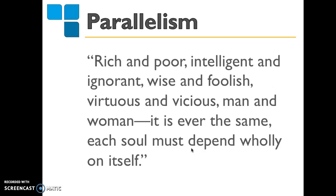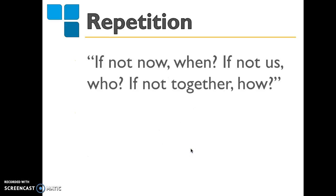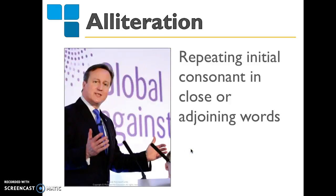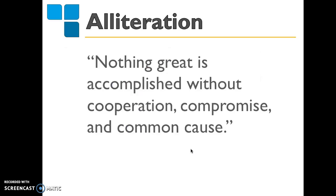The second device is repetition — repeating the same word or set of words over and over again, where you can also repeat an entire sentence. For example: 'If not now, when? If not us, who? If not together, how?' Alliteration is the third device — repeating initial consonants in close or adjoining words. An example: 'Nothing great is accomplished without cooperation, compromise, and common cause.' You see alliteration used a lot with politicians.